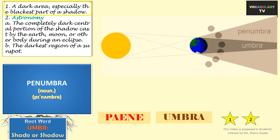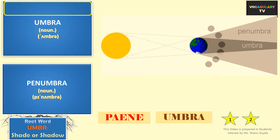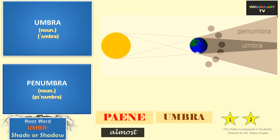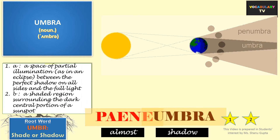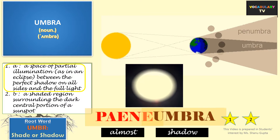A related word is penumbra. The prefix 'pen' means almost, so the term literally means 'almost shadow,' and it refers to the peripheral or outlining area of something. Used in astronomy, the word refers to a space of partial illumination — as in an eclipse — between the perfect shadow on all sides and the full light.